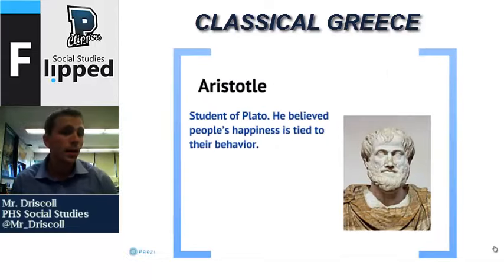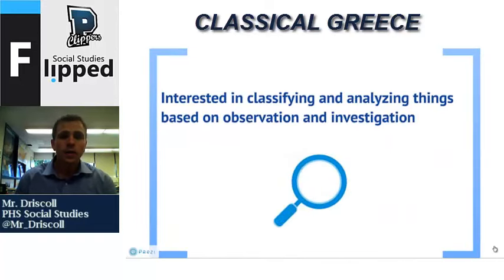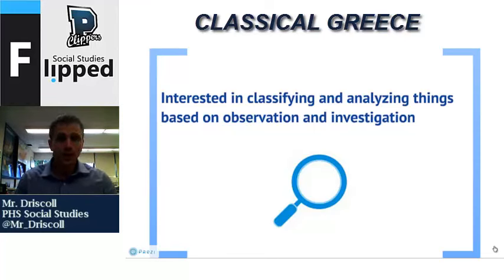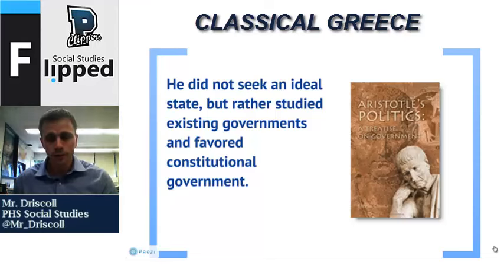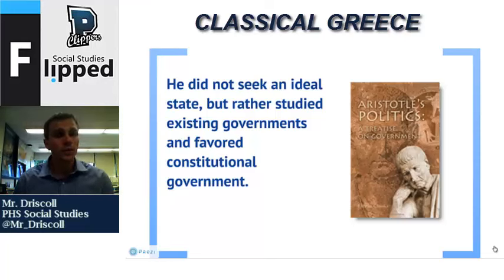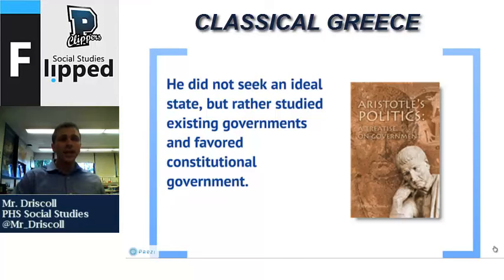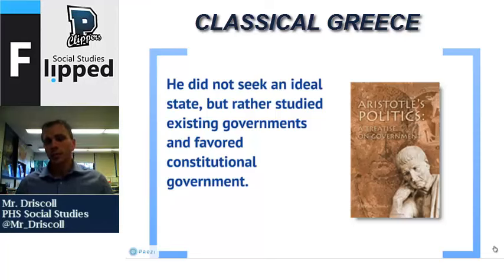Aristotle was the student of Plato and believed that people's happiness is tied to their behavior. He was also interested in classifying and analyzing things based on observation and investigation — not just passively learning, but going out, observing, investigating, and developing theories and concepts. He didn't seek an ideal state, recognizing that was impossible, but studied existing governments and favored what's called a constitutional government. The writings from all of these philosophers heavily influenced our own founding fathers of the United States when they were drafting the Constitution — that was the first large-scale democracy since the ancient Greeks — so they looked back at these experiences when shaping our own constitution, which has changed much since then, but they laid the groundwork.